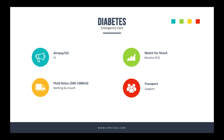One thing we can do in the field is start fluid boluses. Depending on your system, that could be 500 to 1,000 cc's — or ml's — of normal saline. Some systems let you give up to 3,000 ml. Follow your local guidelines for how much fluid bolus you can give. We're not with them that long, so most times we'll get maybe around a thousand milliliters into them.